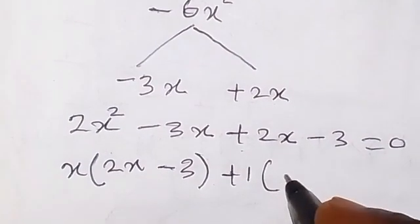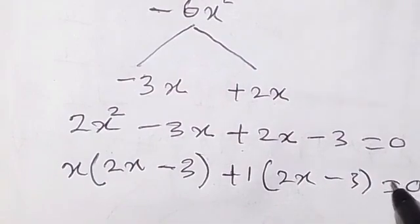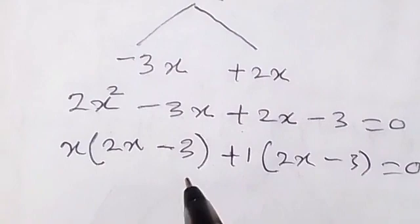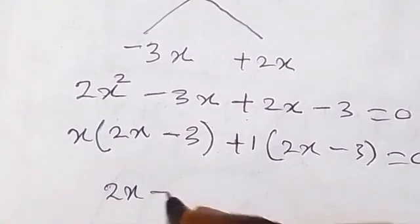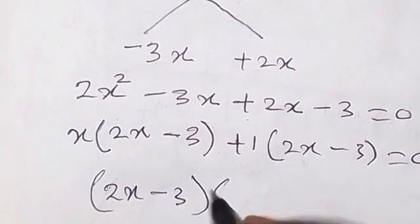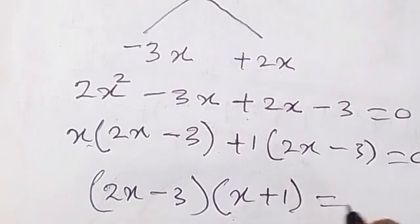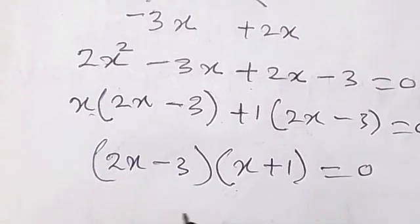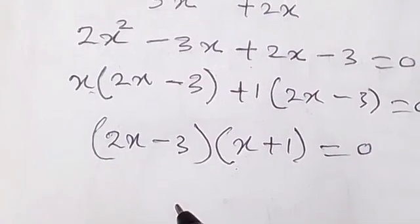Then we have 2x minus 3 equals to 0 now. The brackets are the same thing, we can just write one of it. We have 2x minus 3 times x plus 1 equals to 0 now. So each of these numbers multiply each other and the result is 0. That means one of them has to be 0.